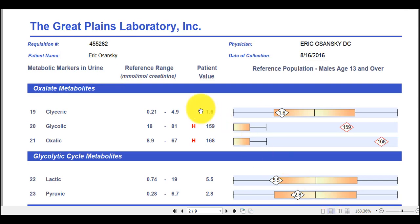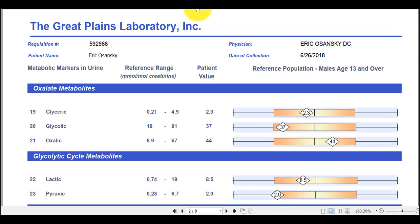So here are my oxalate markers that I collected, I collected a urine sample on August 16th of 2016, and you can see here the glycolic levels were 159, and the oxalic levels were 168. And then I redid the test on June 26th, 2018. Don't necessarily recommend waiting that long between doing a retest, but you can see the glycolic levels down to 37, and the oxalic levels are down to 44.